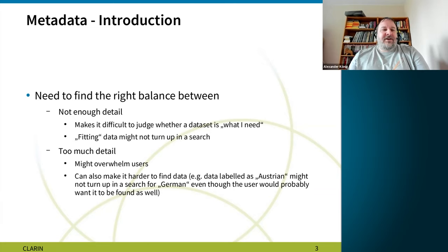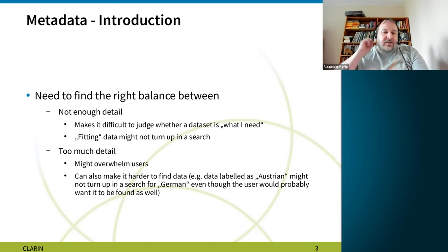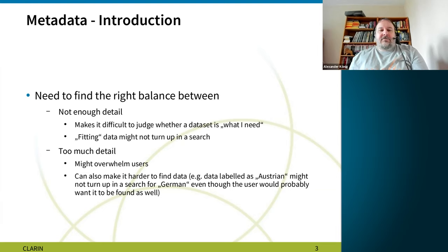The trick with metadata is finding the right balance. If you don't have enough detail — for example, just writing 'this is a CMC corpus' — then someone looking specifically for Twitter data doesn't know if that's what it is. If there's not enough information, it's harder to judge whether the dataset is what you need without looking at the actual data, which takes time. It's also harder to find the right data in a search engine like the VLO or OLAC search.